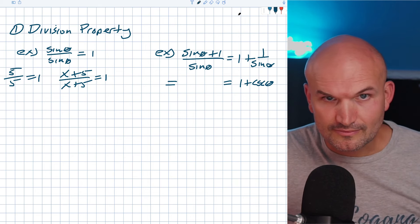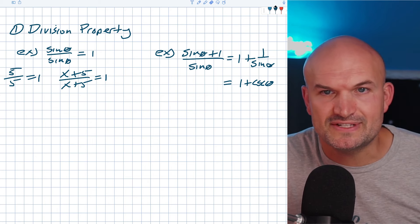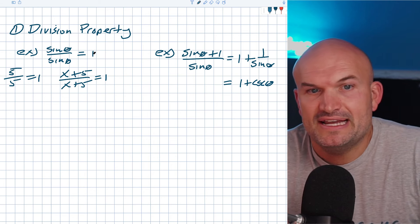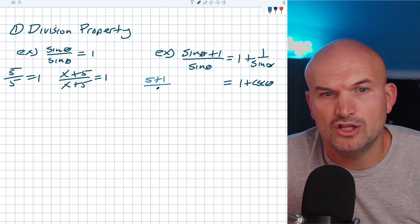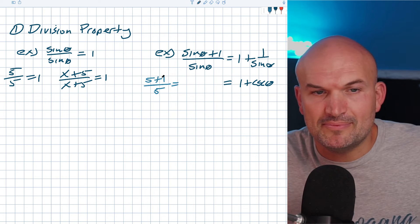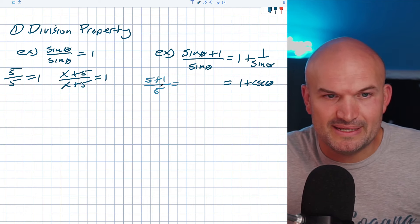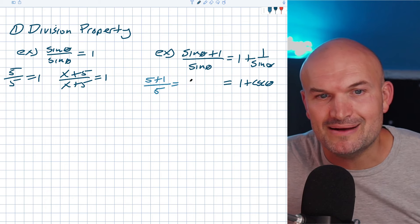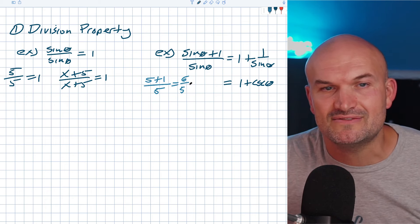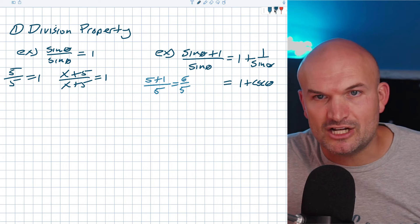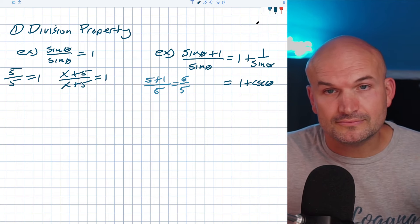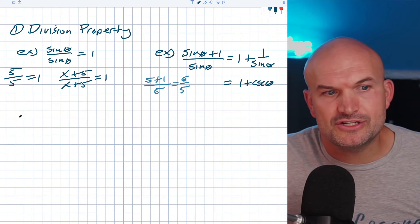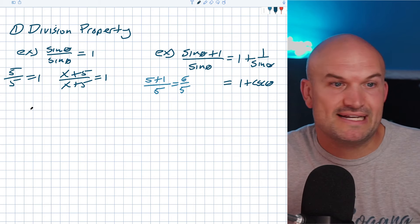I like to use numbers so you can see what I'm doing. Let's pretend sine of theta is five. If I had five plus one all over five, think about it - what is five plus one divided by five? That's going to be six over five. It's not equal to one - the fives don't divide out. So if you get confused with the algebra, go back to what you've learned and use numbers or variables to make sense of things.